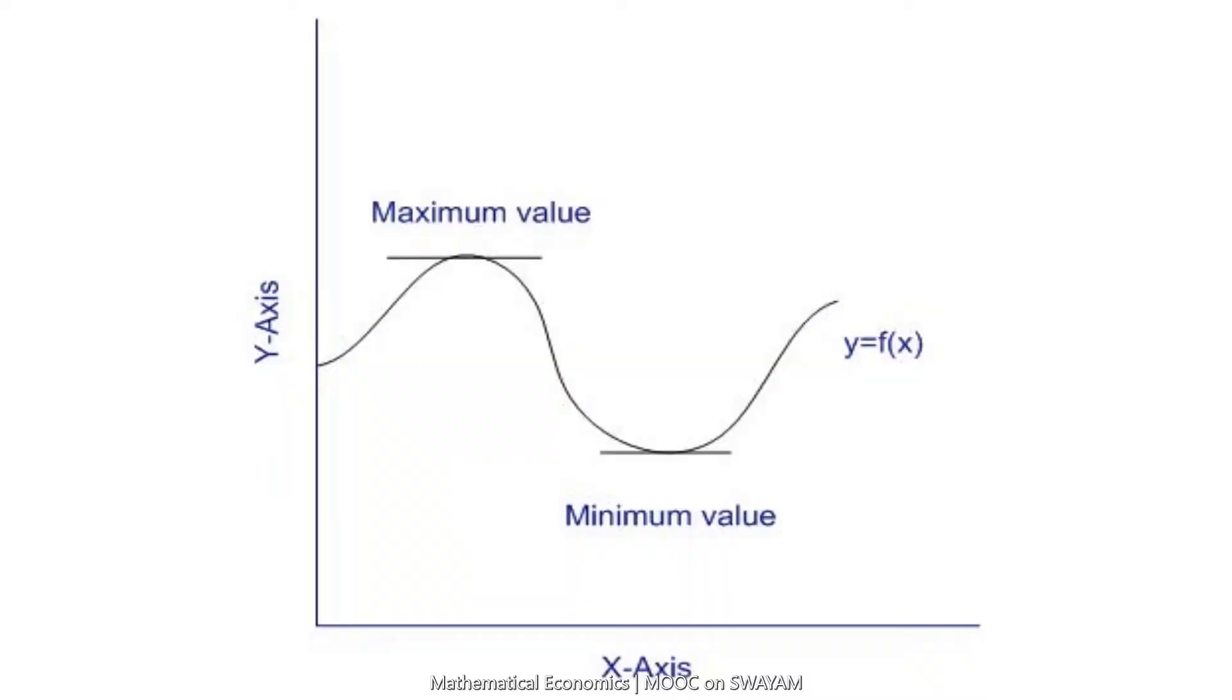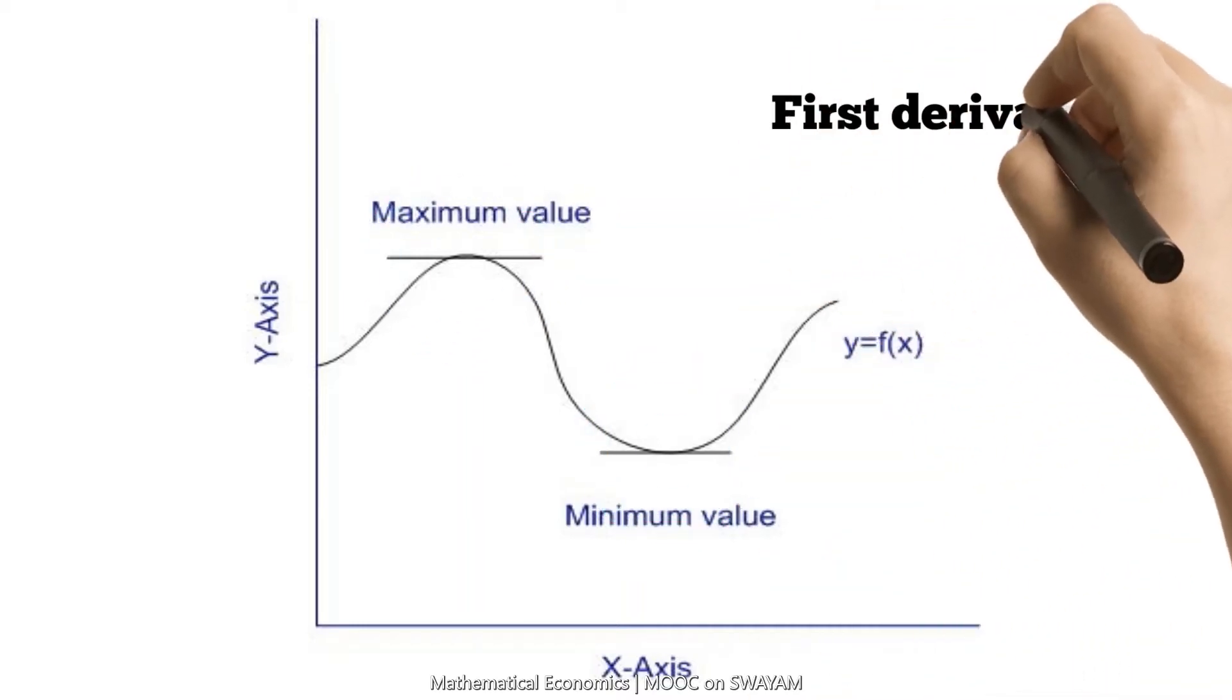Now look at this figure. There are three observations. The first observation is that the tangent at the maximum and minimum point is horizontal. We can say that the slope of the maximum and minimum point is 0. In mathematical language, we may say that the first derivative is equal to 0.